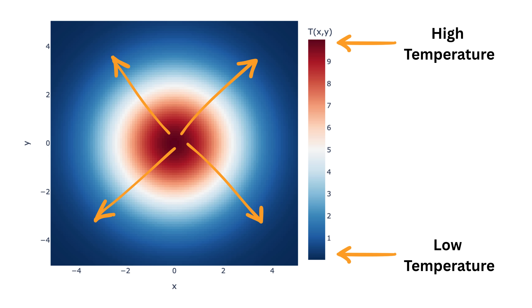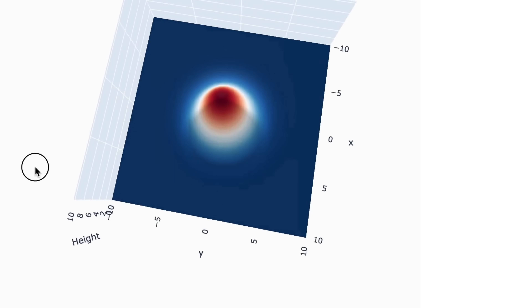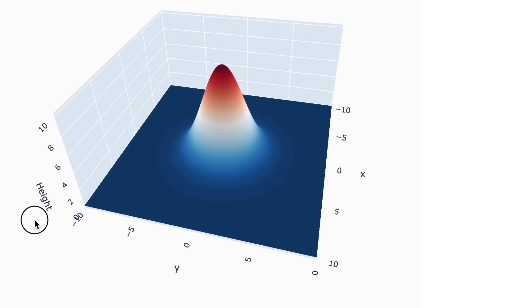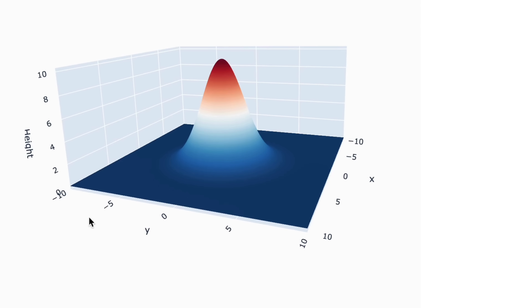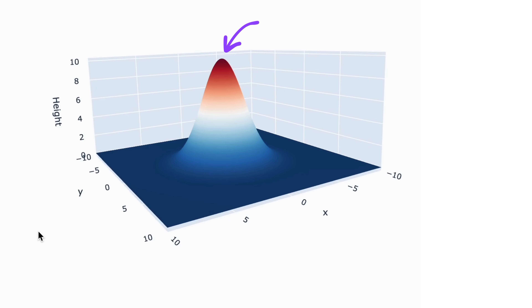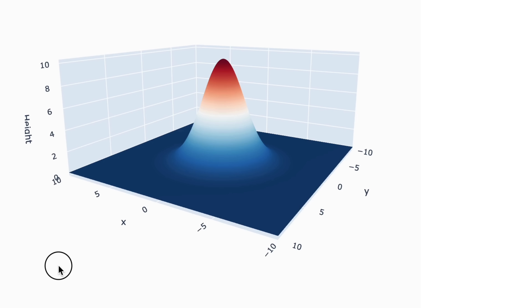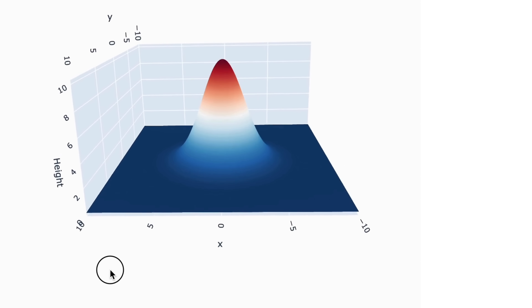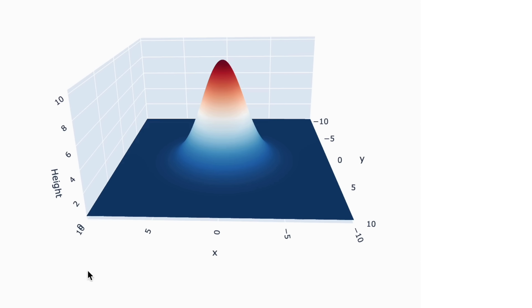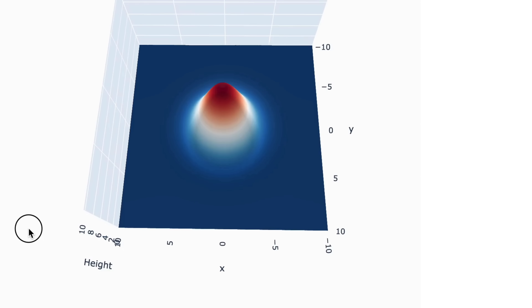On this map, the center would be bright red, and as you move outward, the colors would fade toward blue. Now, if we plot this in 3D, the temperature map turns into a bump or hill. The top of the hill is the hottest point at the center, where x is zero and y is zero, and the slope going down represents the temperature decreasing toward the edges.